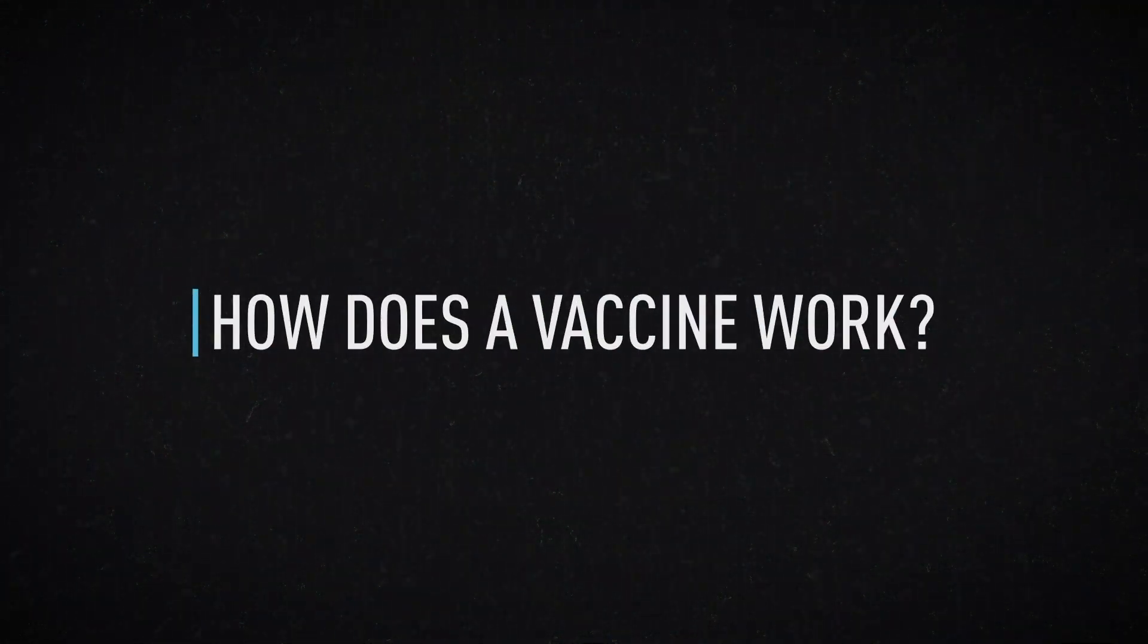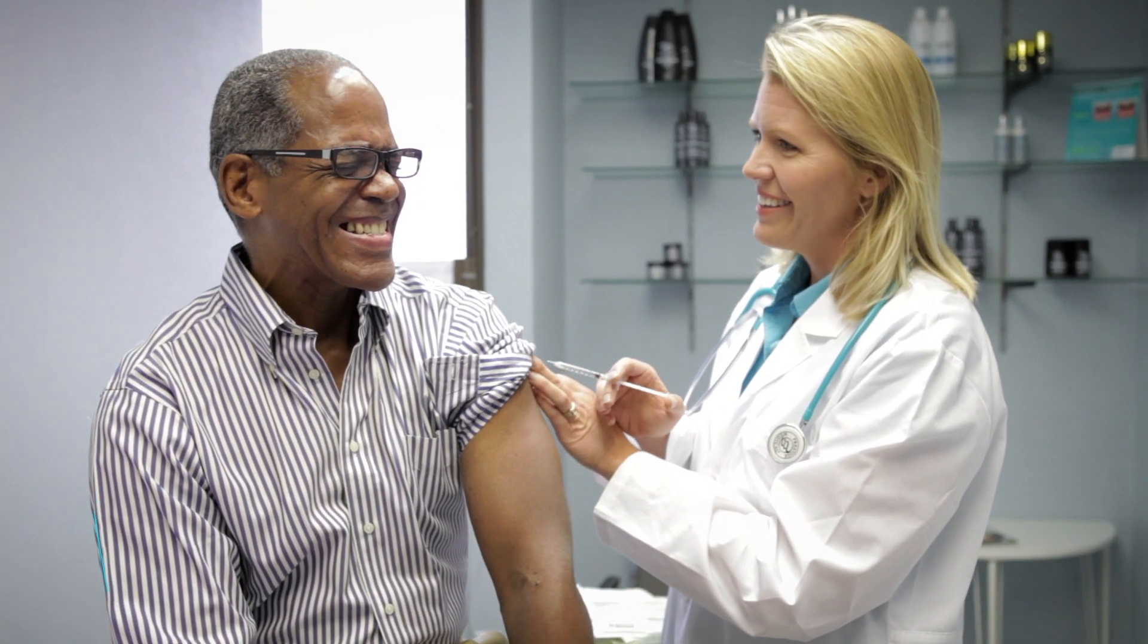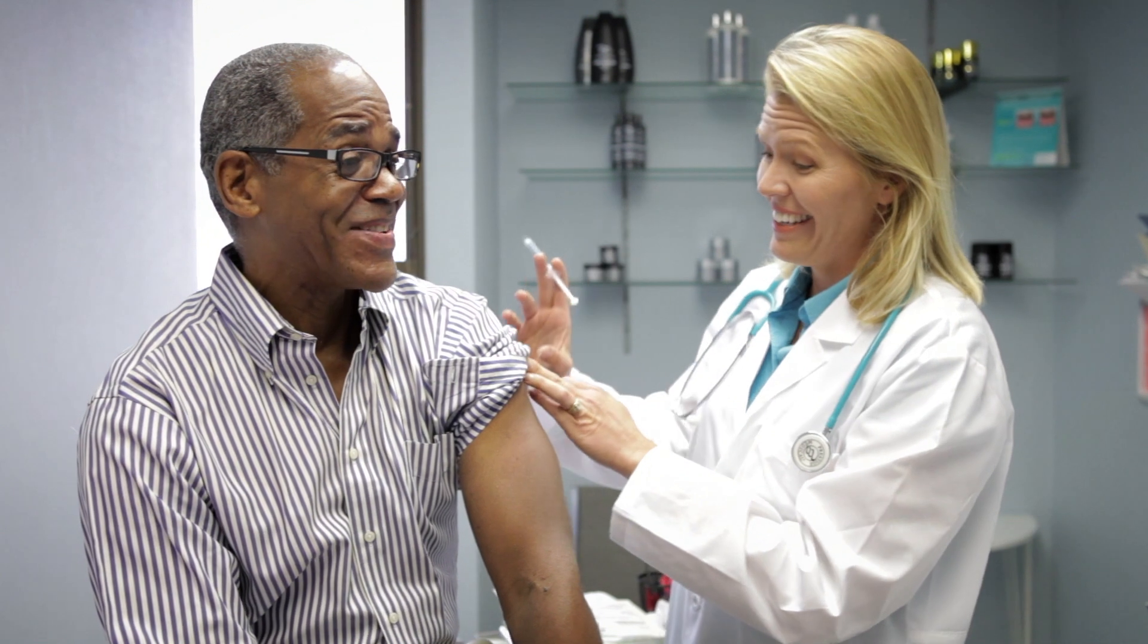So how does a vaccine work? At its simplest, a vaccine works by infecting an individual with a dead or weakened form of the virus or bacteria, allowing the body to use its own immune response to provide a defense.